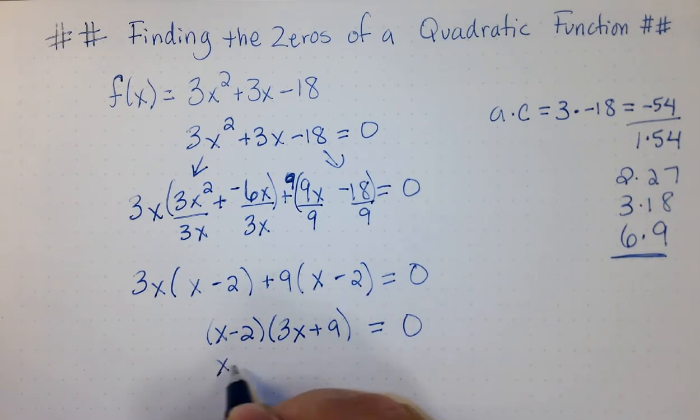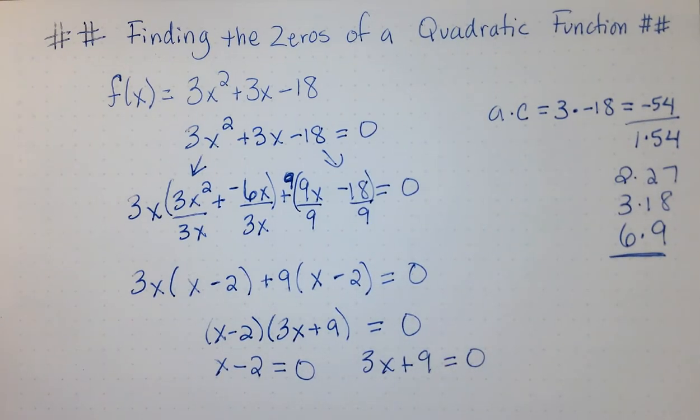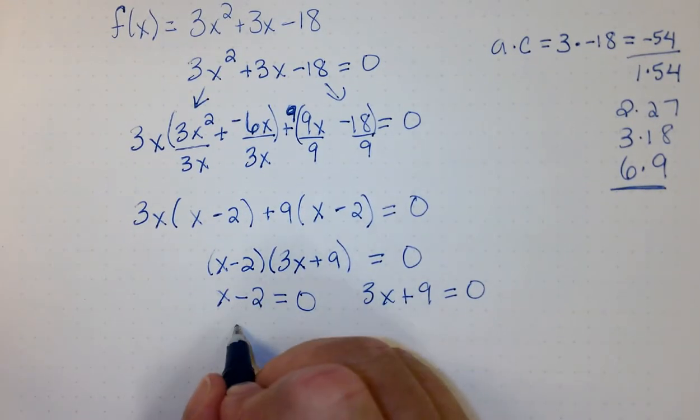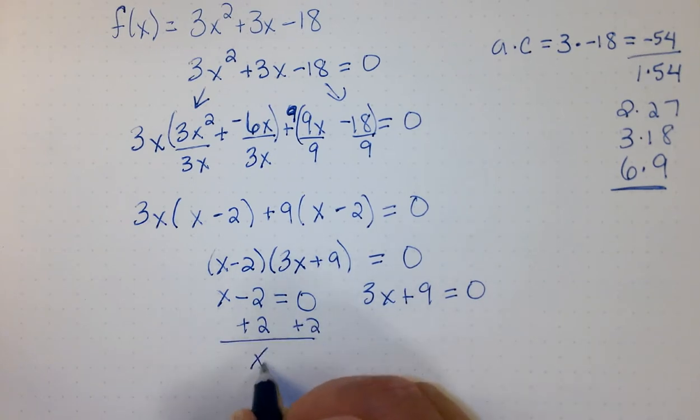So, now we're going to break this down as x minus 2 equals 0. And then, 3x plus 9 equals 0. And then, we're going to solve each of these linear equations. Add 2 on both sides for the first one to get x equals 2.